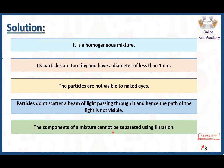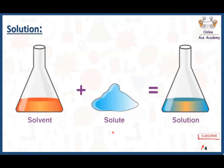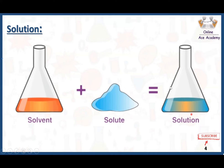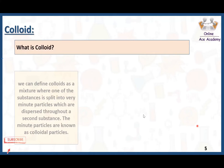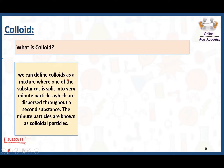The components of a solution cannot be separated using filtration or any physical means, again because the particles of the solution are very very small. When solvent and solute mix together they form a solution — a homogeneous and uniform mixture with a single phase. This is called a solution. Now, what is a colloid? We can define colloids as a mixture where one substance is split into very minute particles which are dispersed throughout a second substance.